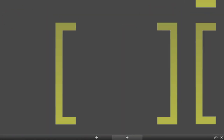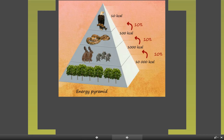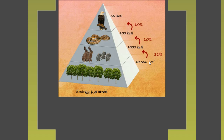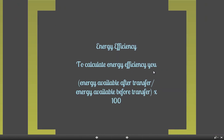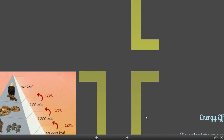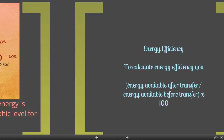From here we can calculate the amount of energy, or the percentage of energy, that is transferred from one trophic level to another. Looking at this, you can see the value is 10 percent. There is a specific equation we can use to calculate this: the energy efficiency equation. You take the energy available after the transfer, divide it by the energy available before the transfer, and then multiply by 100.